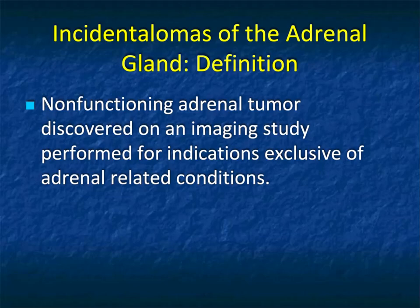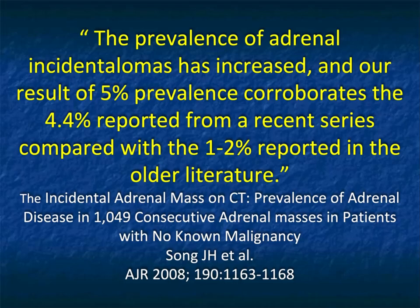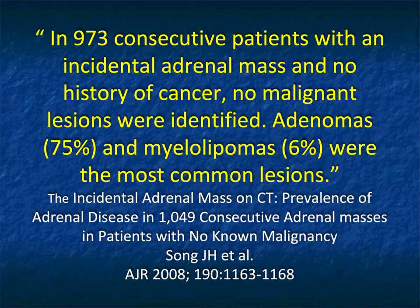The term incidentaloma really started with the adrenal gland — a non-functioning adrenal tumor discovered on an imaging study performed for indications exclusive of adrenal-related conditions. Adrenal lesions are very common, with about 5% prevalence, but in older patients, patients with diabetes, thyroid disease, or obesity, the frequency probably approaches 10%. In an article by Song, they looked at 1,049 consecutive adrenal masses in patients with no known malignancy and found these are mostly benign lesions — adenomas and sometimes myelolipomas.